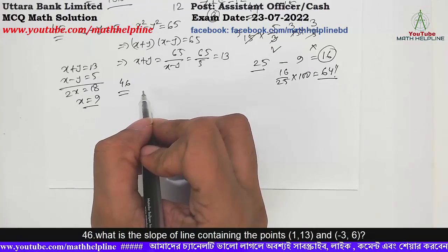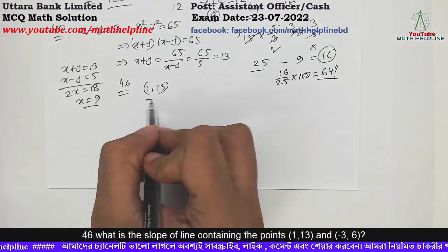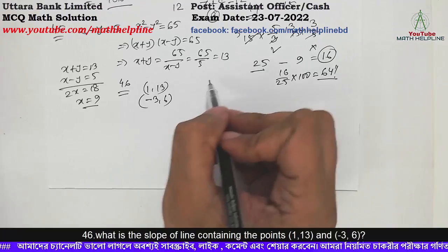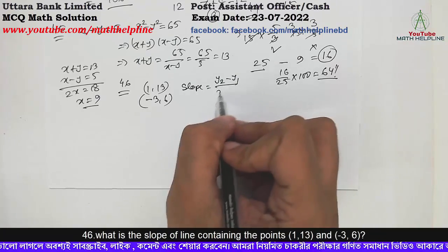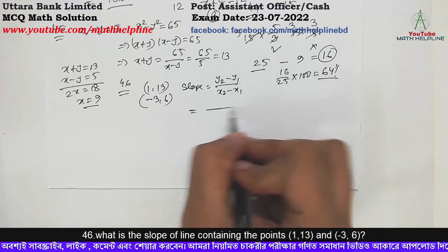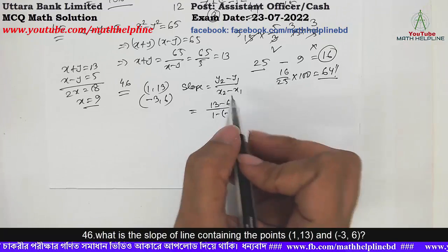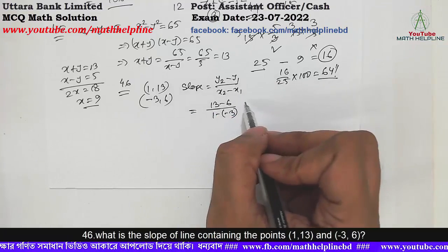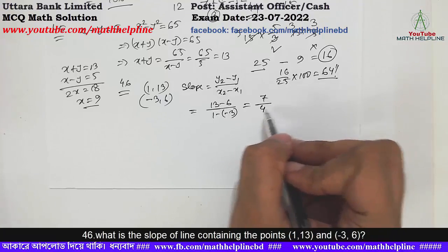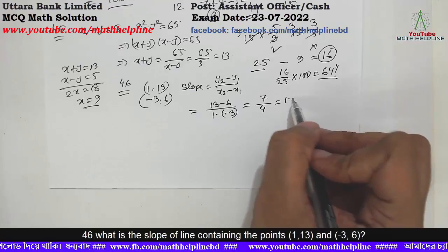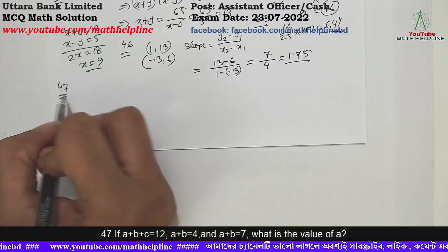Problem number 46: What is the slope of the line containing points (0.1, 13) and (-3, 6)? Slope equals y2 minus y1 divided by x2 minus x1. That gives 13 minus 6 divided by 1 minus minus 3, which equals 7 divided by 4, equals 1.75. So the slope is 1.75.